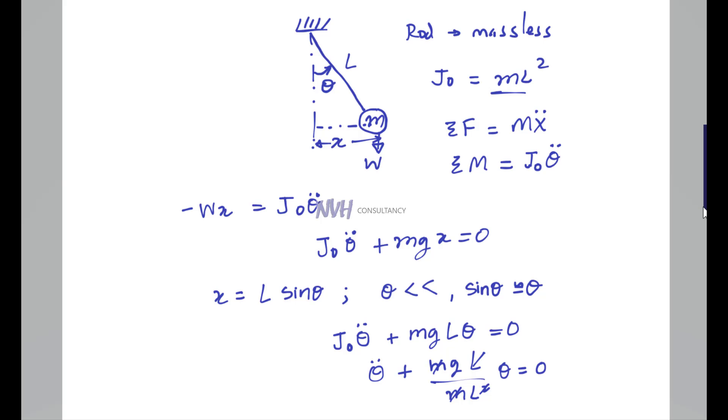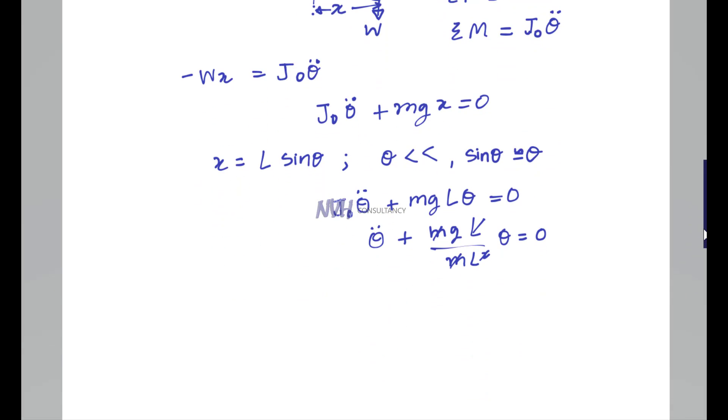If you compare this with the characteristic equation of ẍ plus ωₙ²x equals zero—if you compare this equation with the equation that we have derived—you will know that ωₙ² equals g by L.